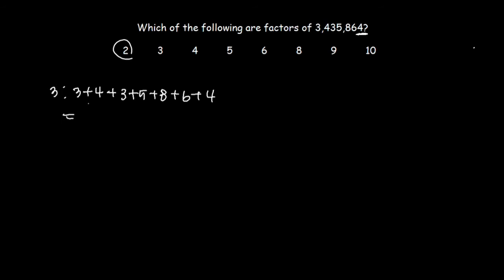3 plus 4 is 7. 7 plus 3 is 10. 10 plus 5 is 15. 15 plus 8 is 23. 23 plus 10 equals 33. Is 33 divisible by 3? Yes, it is because 33 is 11 times 3. It has the factors. One of its factors is going to be 11 and 3. So we know the answer will also include 3.